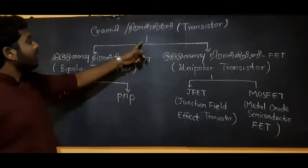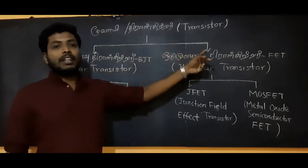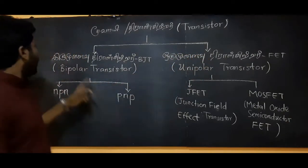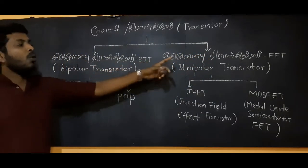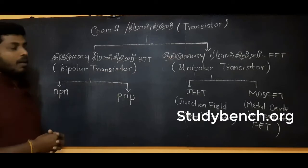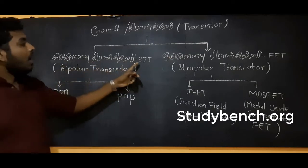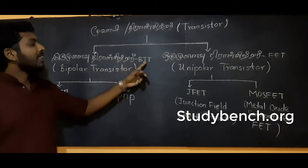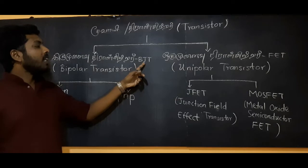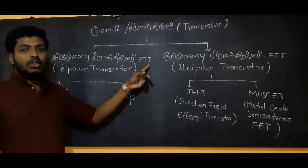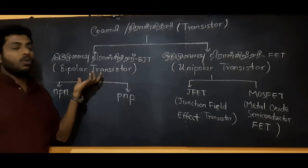The transistor — first, we are talking about the transistor. We will talk about BJT, which is the Bipolar Junction Transistor. We will talk about the Bipolar transistor.